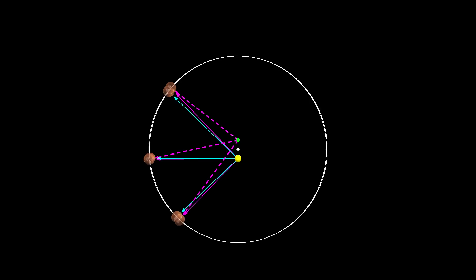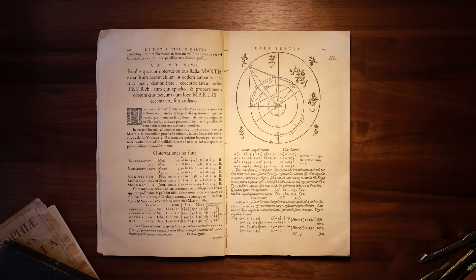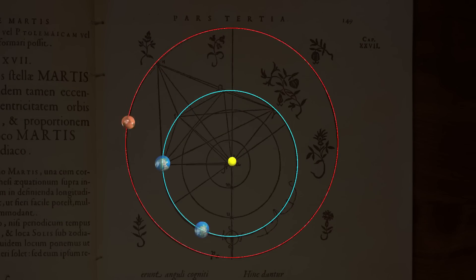Kepler saw that if he bowed the path of Mars inward, his model would better align with the observed angles. To definitively show that the planets did not move in circles, Kepler used a clever triangulation technique. Every 687 days, Mars arrives at the same location on its orbit. Kepler used observations from Tycho's data spaced 687 days apart, effectively fixing the location of Mars in his analysis.